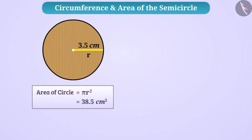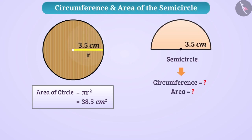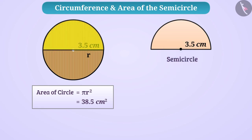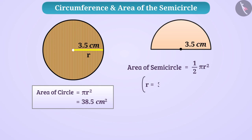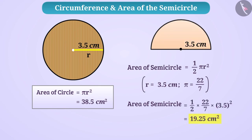Now suppose we have to find the circumference and area of a semicircle of the same radius. A semicircle means half of the entire circle. Therefore, the area of the semicircle will be the area of the entire circle divided by 2, i.e. (1/2)πR². Taking R = 3.5 cm and pi = 22/7, we get the area of the semicircle as 19.25 square cm.